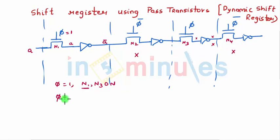Soon phi will go to zero, that means phi bar will go to 1. At that point in time, N2 and N4 turn on. N4 does not have a logical input, it has garbage, so the final output would be still garbage. However, N2 has a logical input.